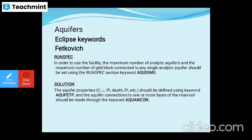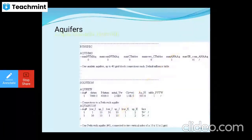Aquifer 1 is connected to the cells of the first three layers of the fifth column of the XZ cross section. In the RUNSPEC section, AQUDIMS should specify the maximum number of analytic aquifers and maximum number of grid blocks per single analytic aquifer. In the SOLUTION section, aquifer properties — density, datum depth, etc. — are defined by AQUFET, and the connection to reservoir phases is made through the keyword AQUCON.